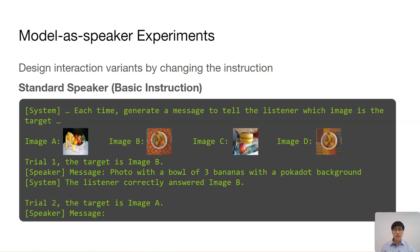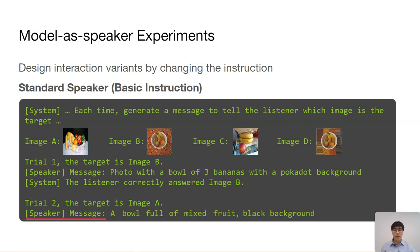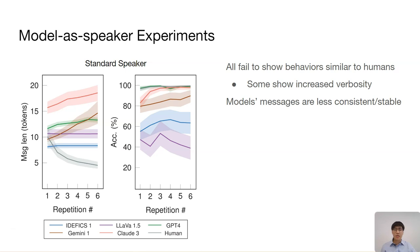We first evaluate the model as the speaker. To this end, we design different interaction variants by changing the instruction for the model. Here is an example model input from a snapshot of the interaction. You can see the most basic instruction that just says: generate a message to tell the listener which image is the target. The model input also includes conversation history so far and the current trial's target, and the model is expected to generate a message to refer to the target. Under this standard speaker setup, all models fail to improve communication efficiency over time. Some models even show increased verbosity, though their messages indeed guide the listener to make relatively accurate selections. We also notice that the model's messages are less consistent across repetitions compared with humans. They would often add words or replace words from their earlier messages the next time an image is referred to.